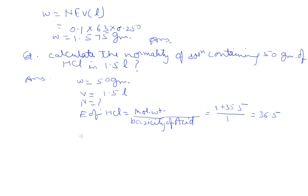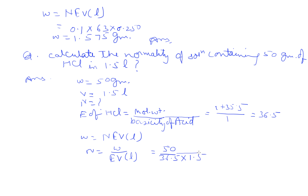Using W = N*E*V, we rearrange to N = W / (E*V). W is 50 grams, equivalent weight is 36.5, and volume is 1.5 liters. Solving these values, normality N = 0.091. That is our answer.